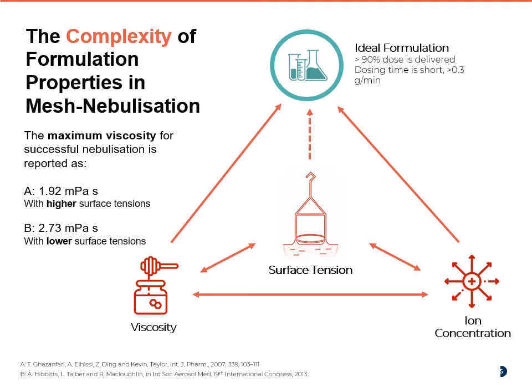The impact of this becomes more apparent when we try to compare the literature data. One of the most prominent differences we saw was for viscosity, where the maximum viscosity for successful nebulisation was reported in one paper near 2 mPa·s and another paper around 2.7 mPa·s. Although the formulations differed in their makeup, the surface tension for each experiment was also markedly different, which led us to ask whether the three physical-chemical properties could actually have some predictive power over the output rate of a formulation.